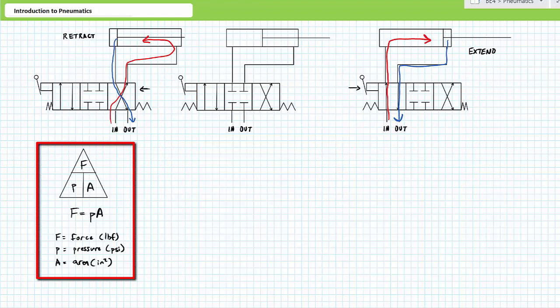Next, Pascal's law states that force is equal to pressure times area. Increased pressure on a large surface area results in more force. Conversely, decreased pressure on a smaller surface area results in less force.